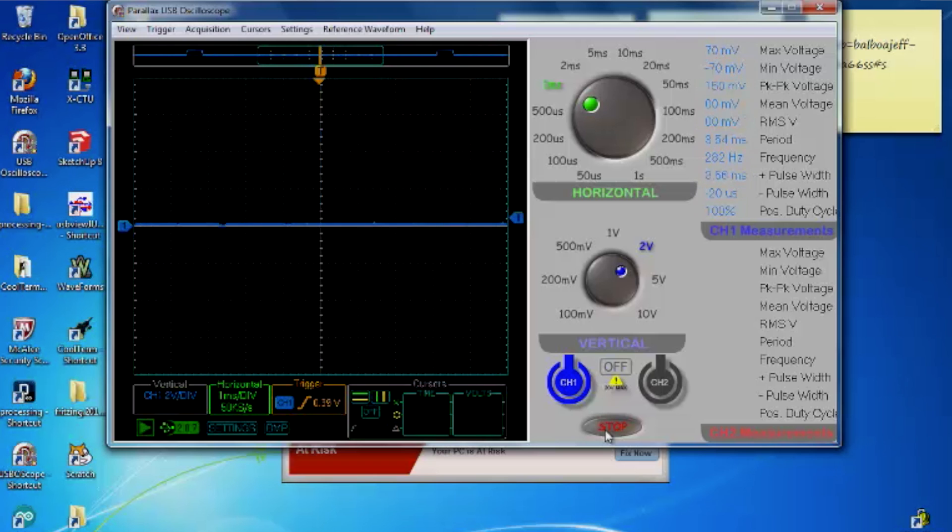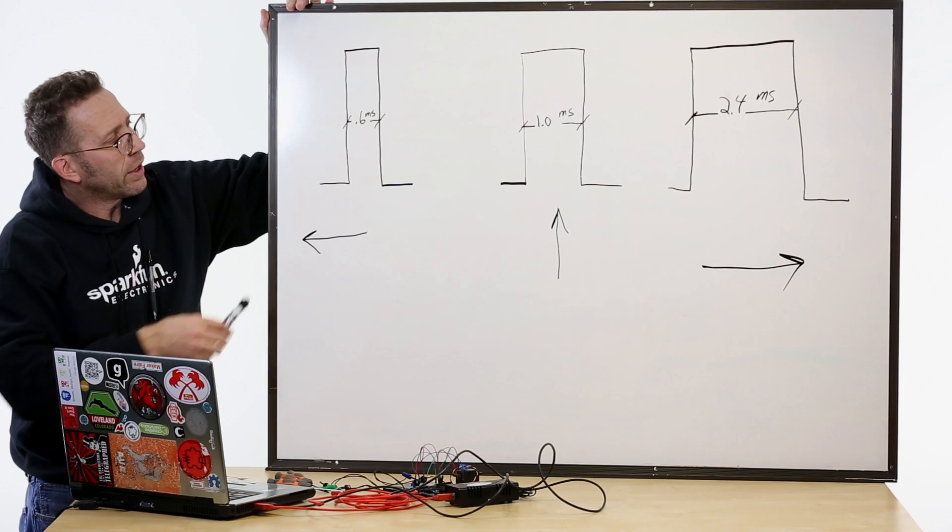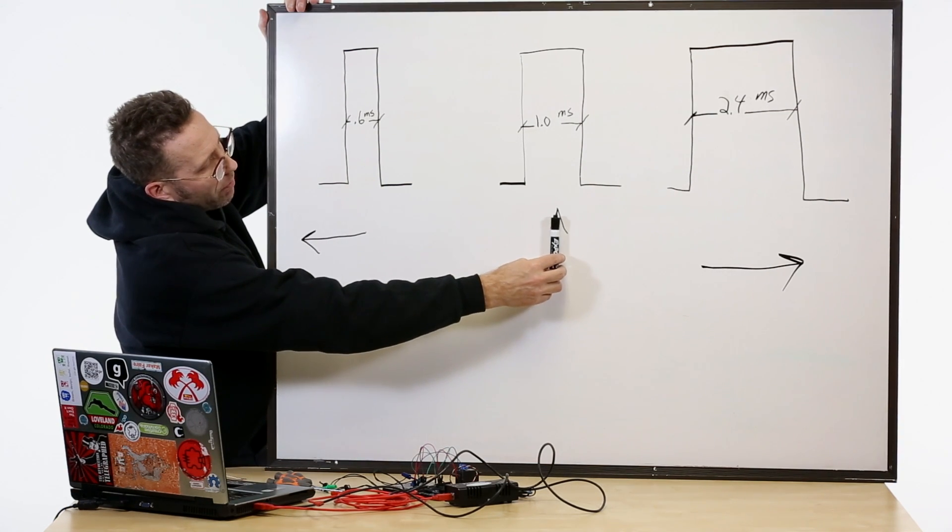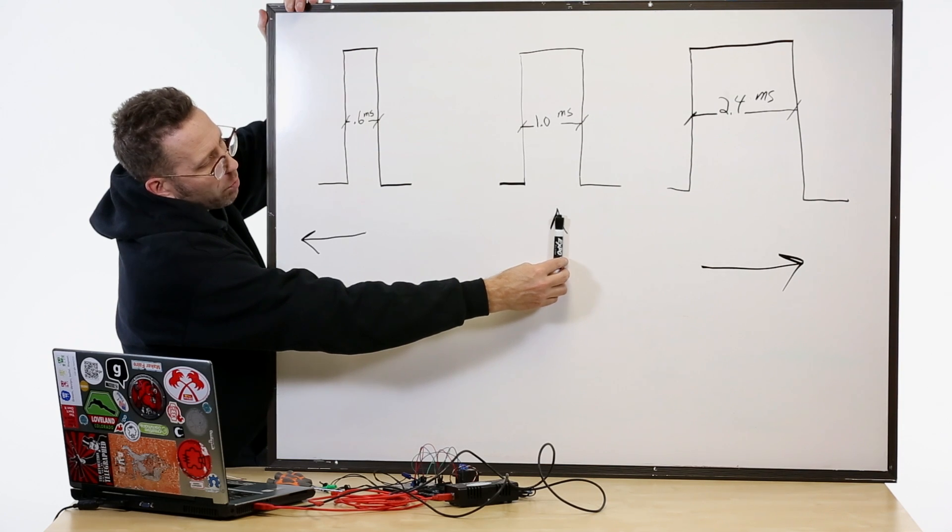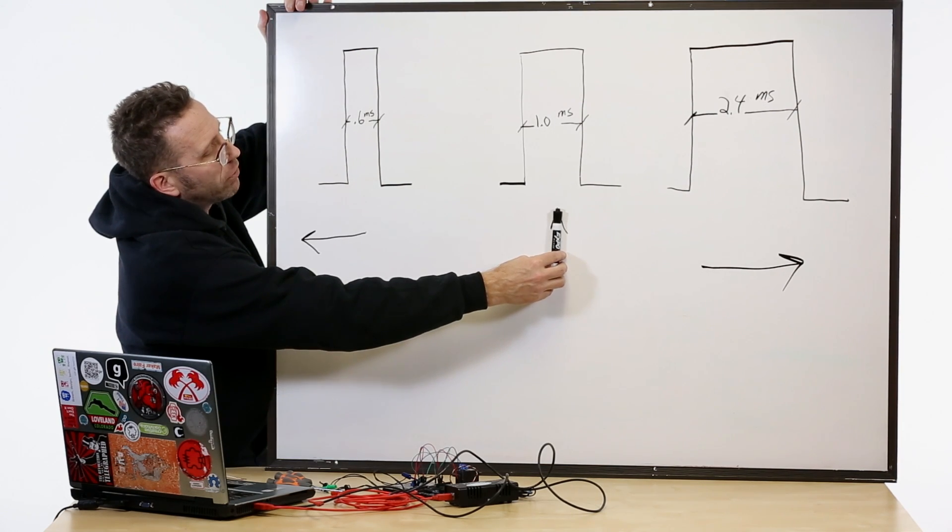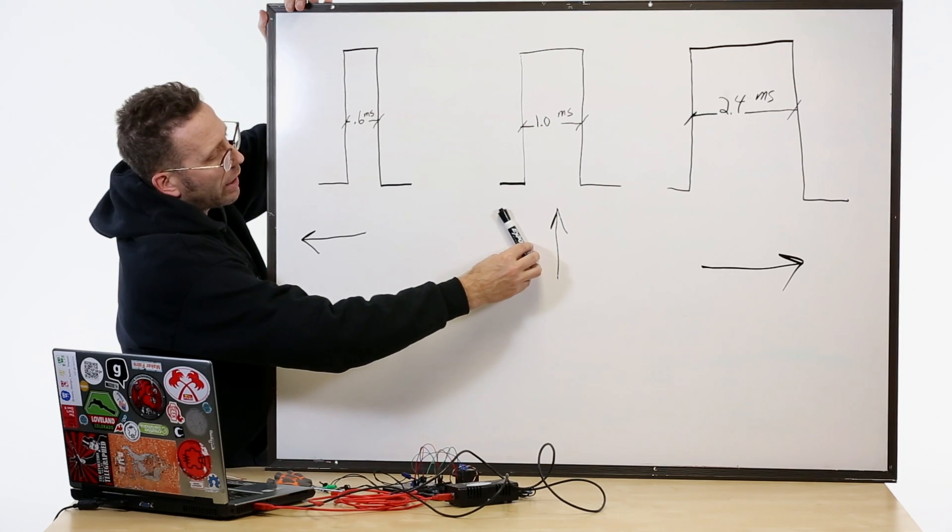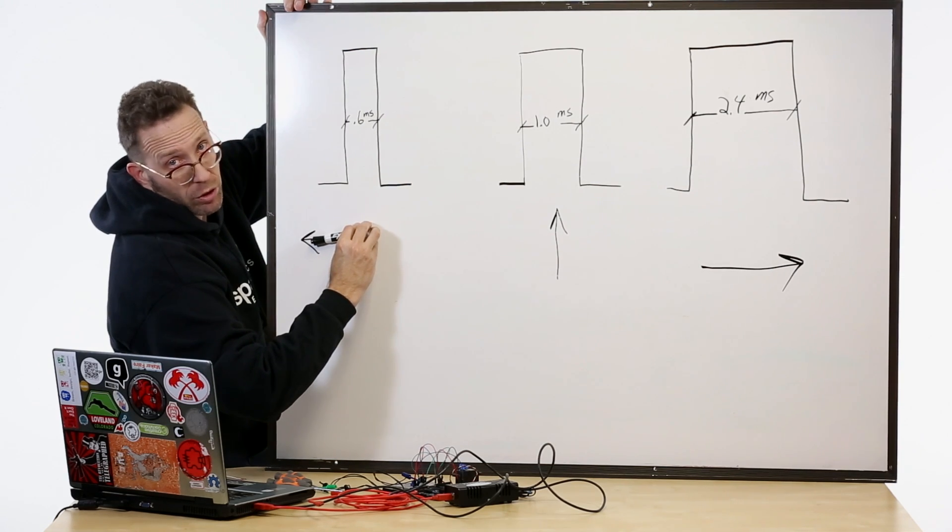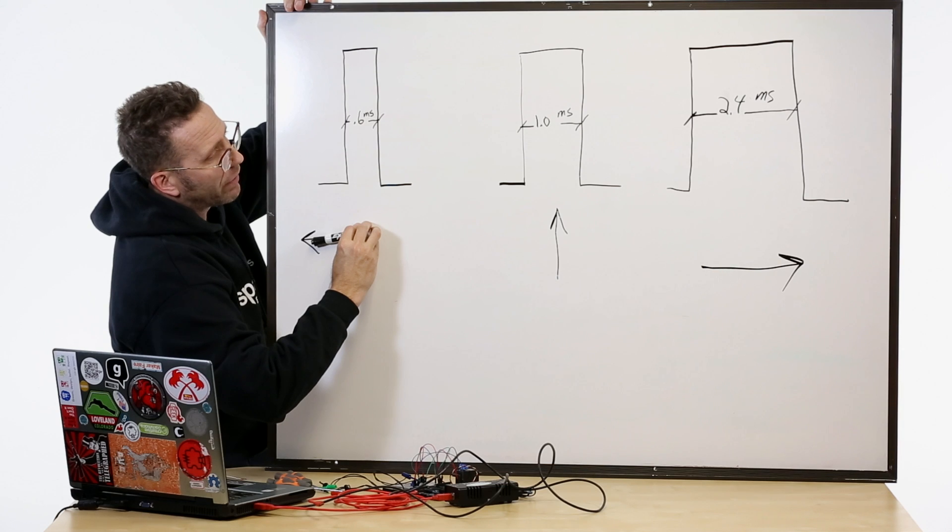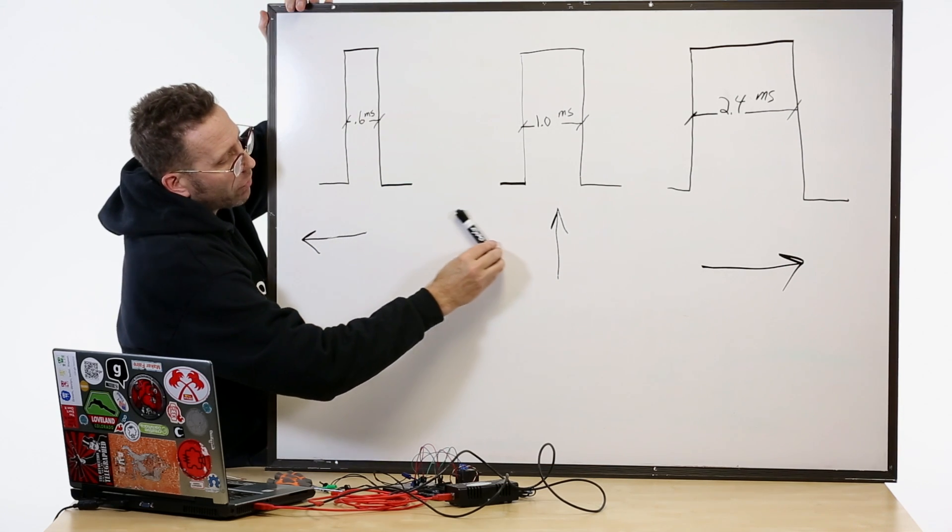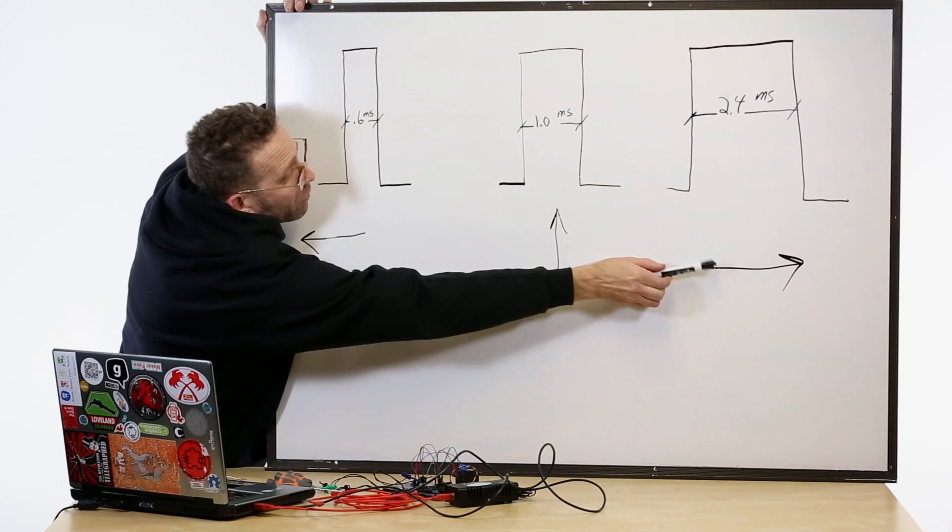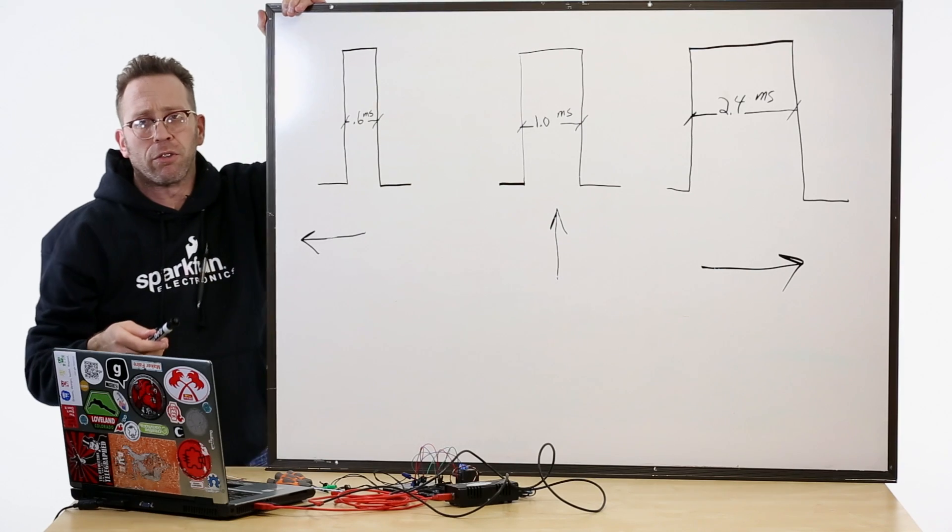So, let's take a look at the hows and whys of how that servo operates. So, we have these varying pulse widths. If I start in the middle with a one millisecond pulse width, my shaft is pointing straight up and down or 90 degrees in orientation. As my pulse width decreases, my shaft will rotate until at 0.6 milliseconds, it's pointing at zero degrees, roughly. And conversely, if I go the other way, as my pulse width increases, my shaft rotates the opposite way until at around 2.4 milliseconds on our oscilloscope, it's roughly at 180 degrees.